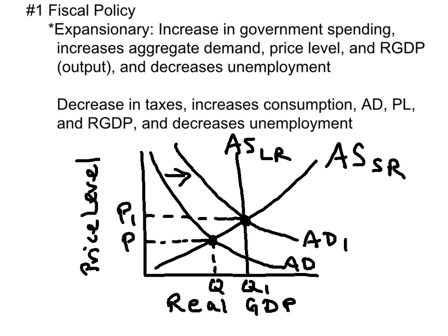Let's start off with fiscal policy. Suppose the economy is in recession — the government should pursue an expansionary fiscal policy. This can be an increase in government spending or a decrease in taxes. If the government increases government spending, this will increase aggregate demand, raise the price level, and increase output, also known as real GDP. When real GDP goes up, the unemployment rate will come down.